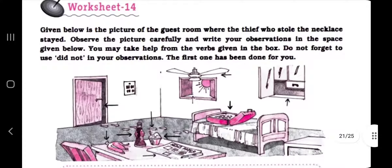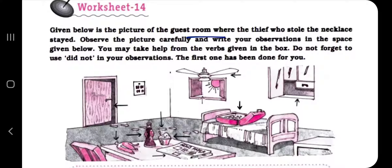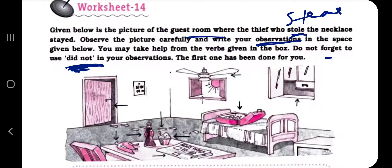Worksheet 14: given below is the picture of the guest room where the thief who stole the necklace — past tense of 'steal' is 'stole' — stayed. Observe the picture carefully and write your observations in the space given below. You may take help from the words in the box. Do not forget to use 'did not' in your observations, just as we did for Cinderella.